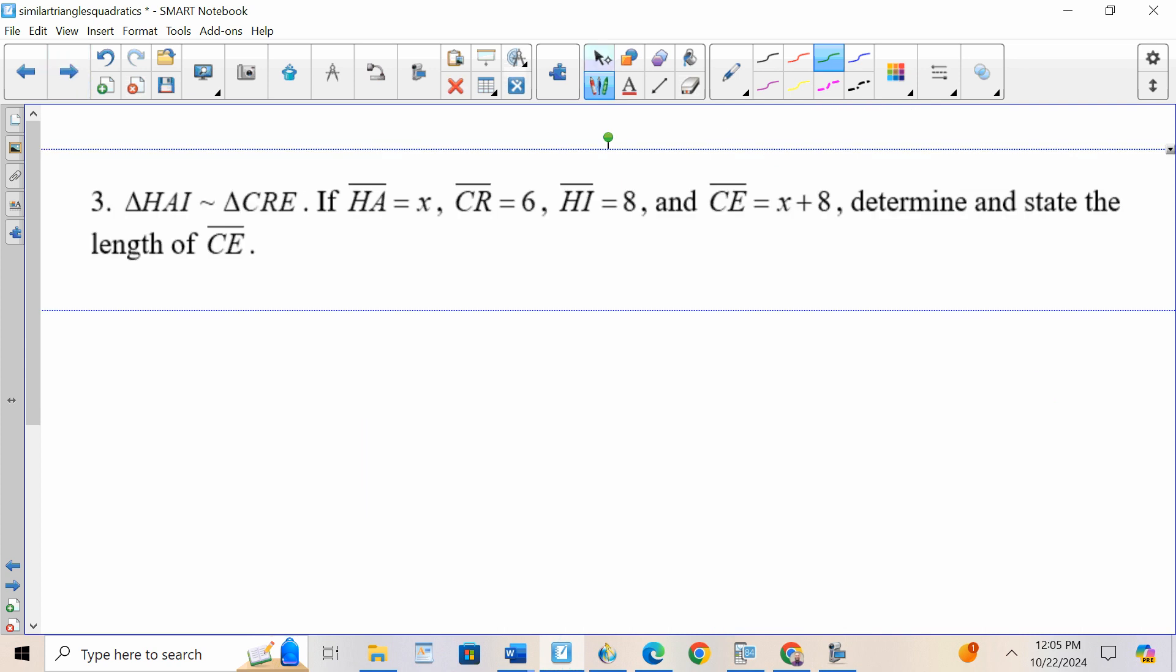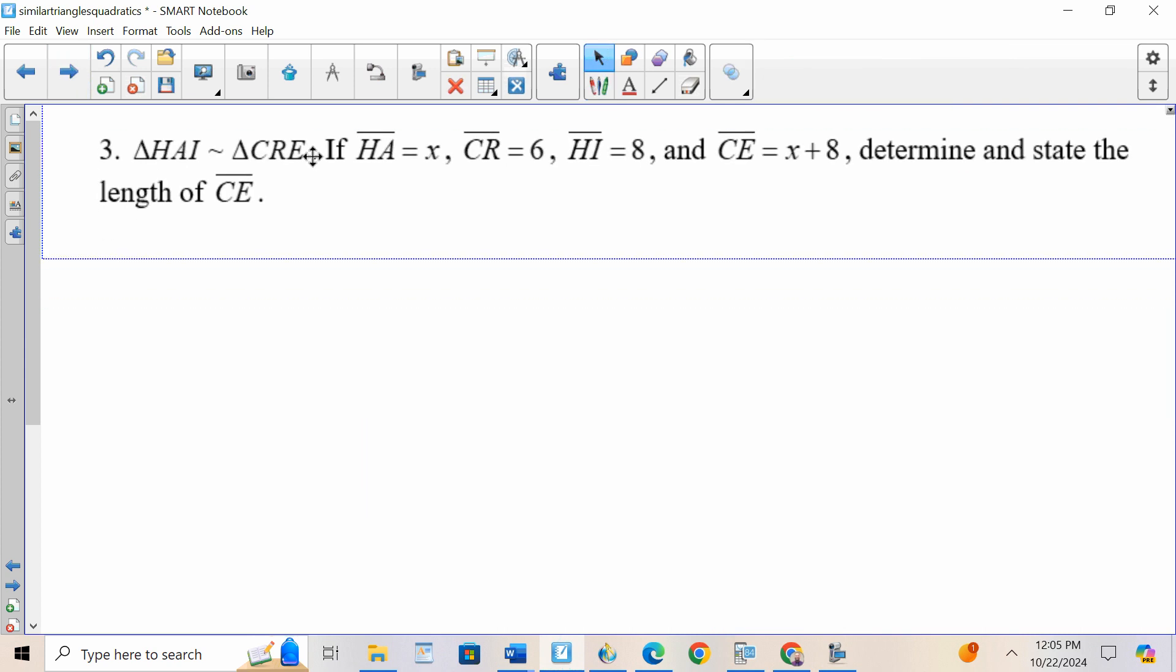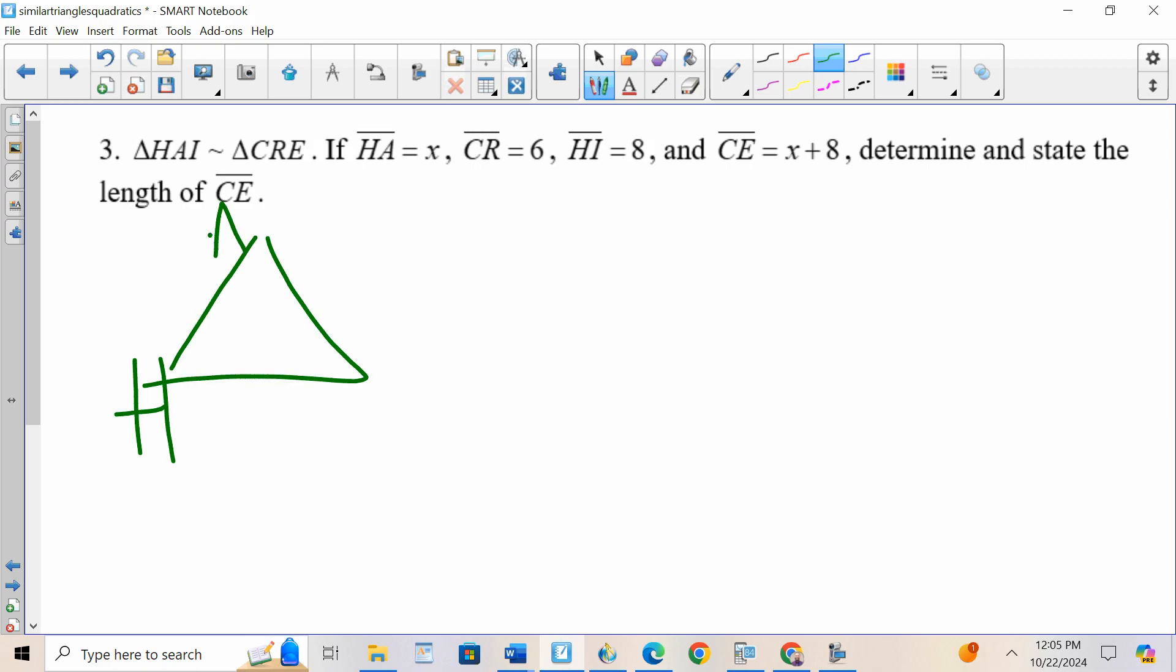Let's take a look at number 3. Triangle HAI is similar to triangle CRE, so I'm going to draw 2 triangles, I'm going to label them HAI and CRE. HA is X, CR is 6, HI is 8, CE is X plus 8.